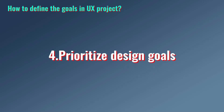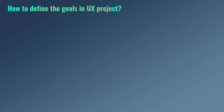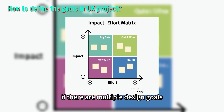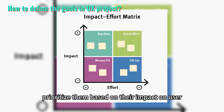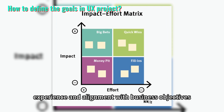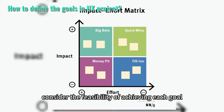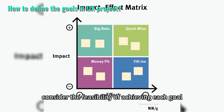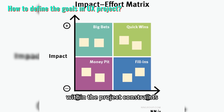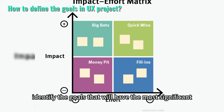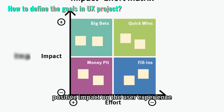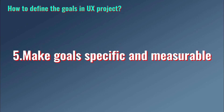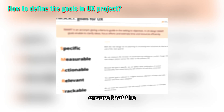Step four: prioritize design goals. If there are multiple design goals, prioritize them based on their impact on user experience and alignment with business objectives. Consider the feasibility of achieving each goal within the project constraints, and identify the goals that will have the most significant positive impact on the user experience.